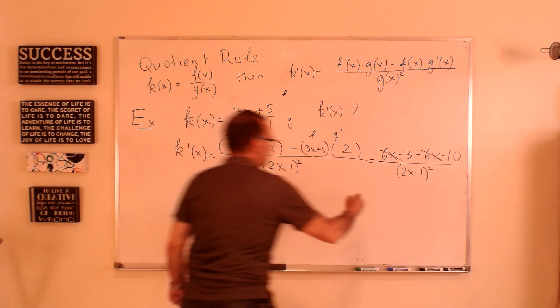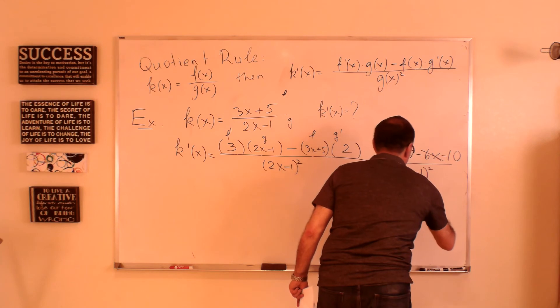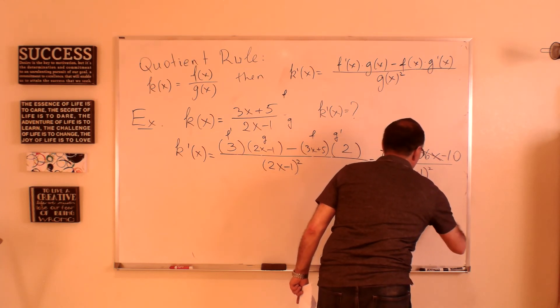It's negative 13 over 2x minus 1 squared.